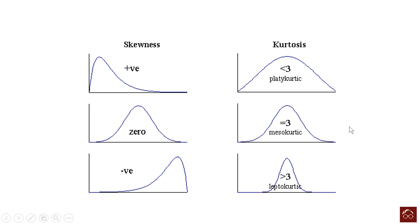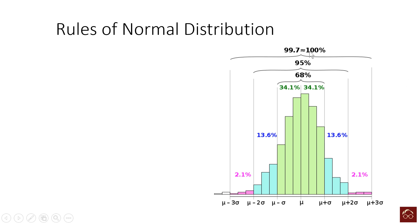The main properties of normal distribution are: about 68 percent of data will be within plus one and minus one standard deviation from the mean. About 95 percent of data will be within plus two and minus two standard deviations from the mean. And close to 100 percent of data falls within minus three and plus three standard deviations from the mean.